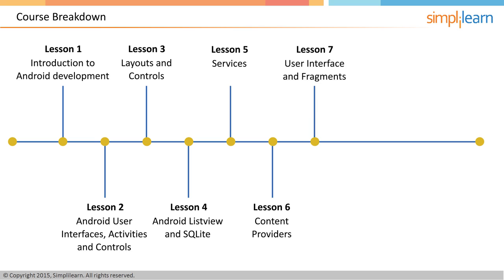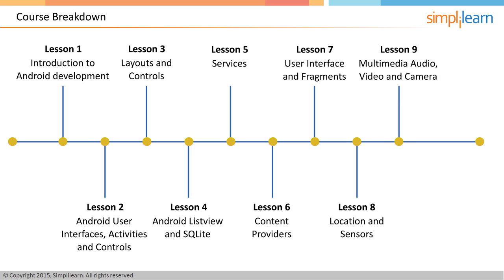Lesson 7 is on user interfaces using fragments. You will learn how to build a time picker user interface that can work on both mobile applications and tablets. Lesson 8 is about location and sensors — how to get location on your mobile phone and understand all the different sensors on an Android phone to make the best use of them. Lesson 9 is all the fun stuff about multimedia: you will learn how to record video and audio, and how to use the camera to take a picture or record a video. Lesson 10 will introduce you to Google Play — you will learn what it's all about and get the checklist required for your application to be hosted on Google Play.